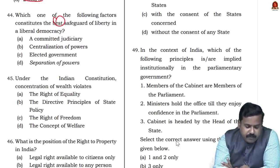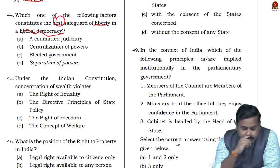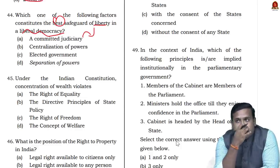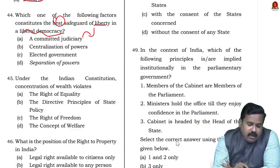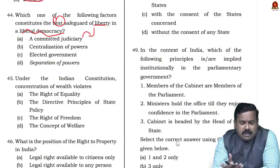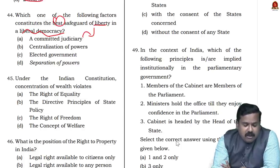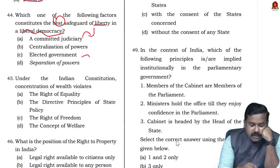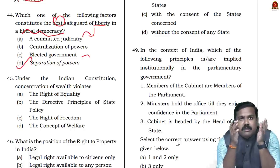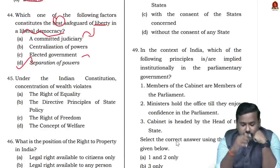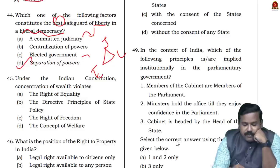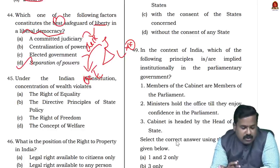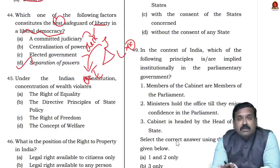Question 42: Which best safeguards liberty in a liberal democracy? A committed judiciary — one that agrees with all government actions — is not a safeguard. Centralization of powers can take away liberty. An elected government does not ensure liberty — many elected governments have become autocratic. The answer is separation of powers. Separation of powers divides authority among judiciary, legislature, and executive; if the legislature or executive makes a mistake, the judiciary can keep a check on it. This is based on NCERT understanding.